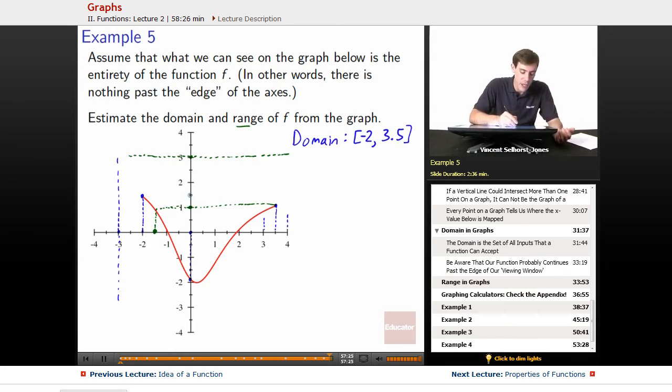The highest that we manage to get to is right here. So it looks like 1.5 is the highest that we manage to get to with the graph. It never shows up over here, but that's okay because it shows up somewhere. And then finally, it looks like the lowest we manage to get to is negative 2.